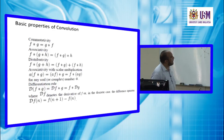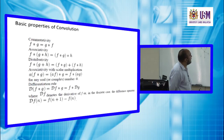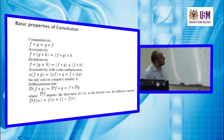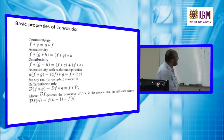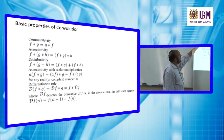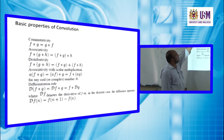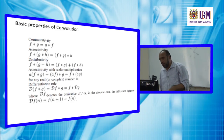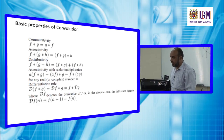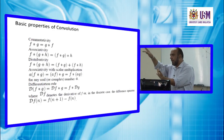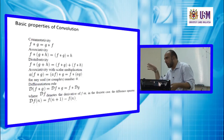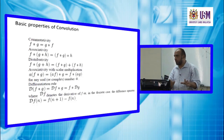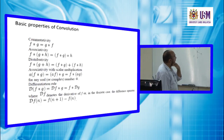Convolution has several important properties. It is commutative: convolving f with g gives the same result as convolving g with f. So it does not matter which function you flip and shift — the result is identical.